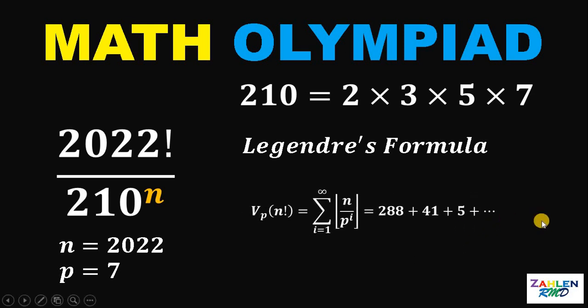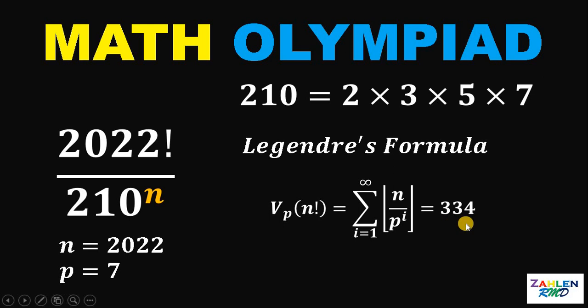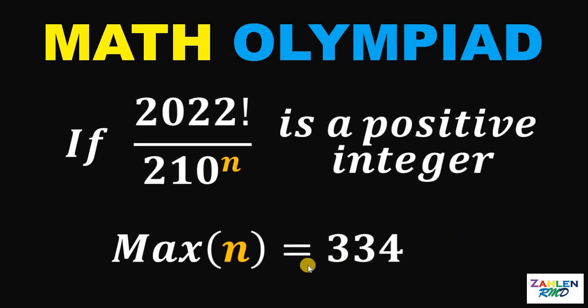And the next term must be 0. Now let's add those numbers, 288 plus 41 plus 5 will give us 334. This means that the highest power of 7 that divides 2022 factorial is 334. Which means that the maximum value of integer n must be 334.